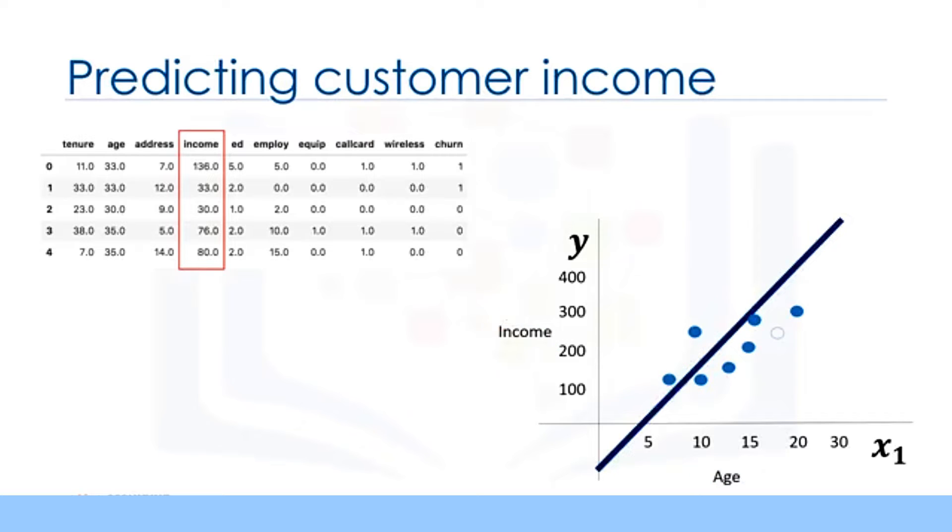With linear regression, you can fit a line or a polynomial through the data. We can find this line through training our model or calculating it mathematically based on the sample sets. We'll say this is a straight line through the sample set. This line has an equation shown as a plus b x1. Now, use this line to predict the continuous value y, that is, use this line to predict the income of an unknown customer based on his or her age, and it is done.